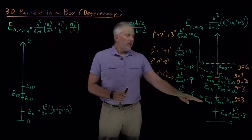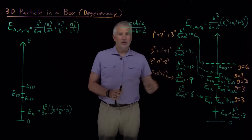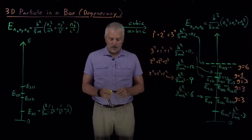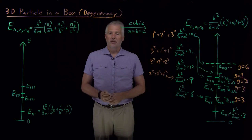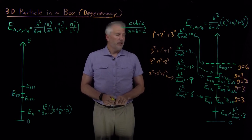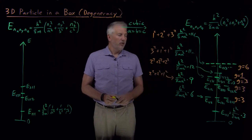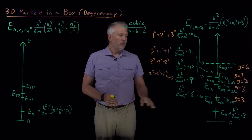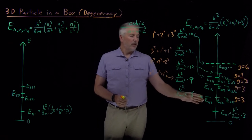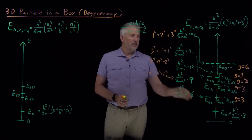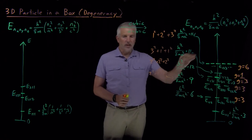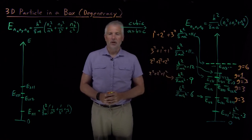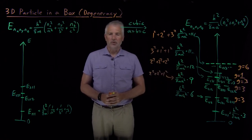Each of these features of the 3D particle in a box will show up in other types of quantum mechanical problems. This is the first time we've encountered cases with both degenerate and non-degenerate states, a mix of different degeneracies, and some difficulty predicting what order those states will appear in.